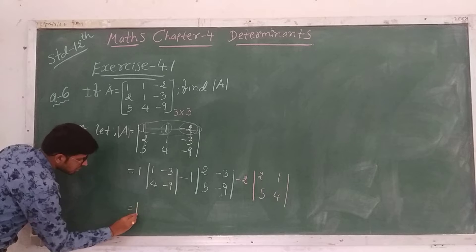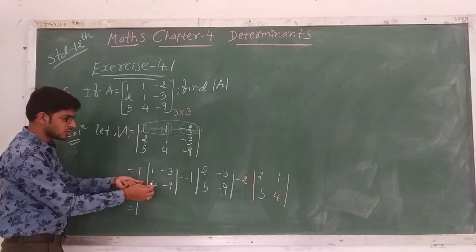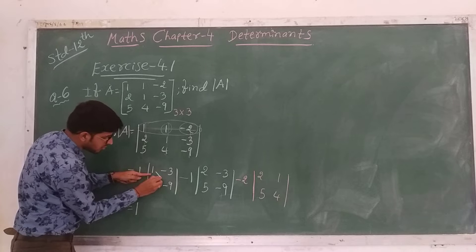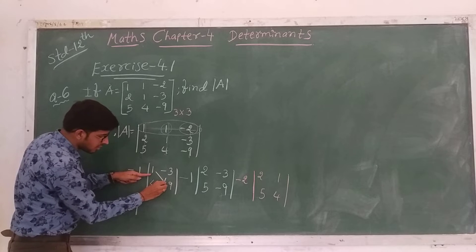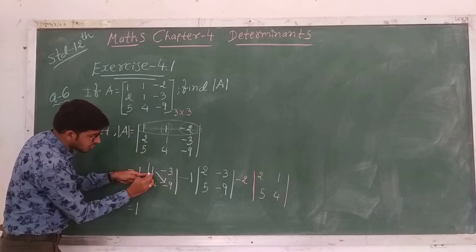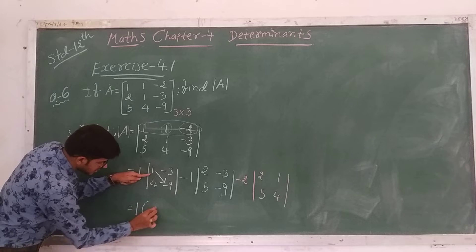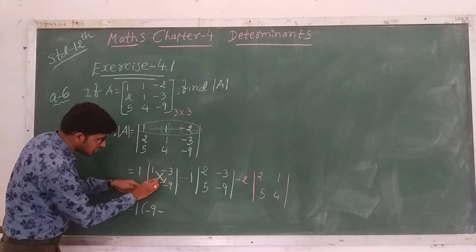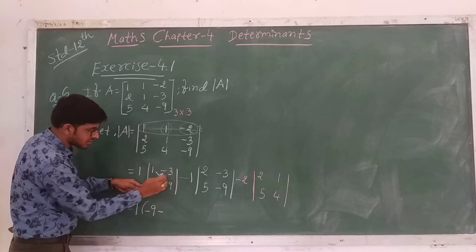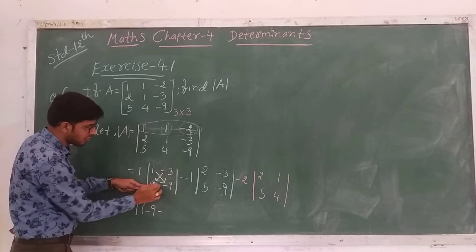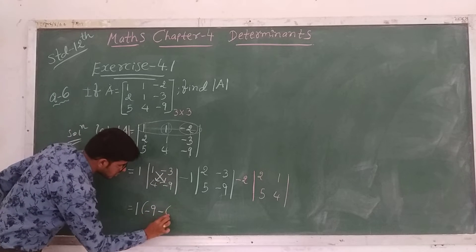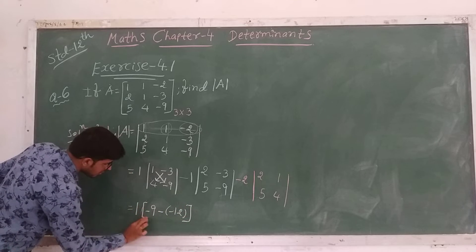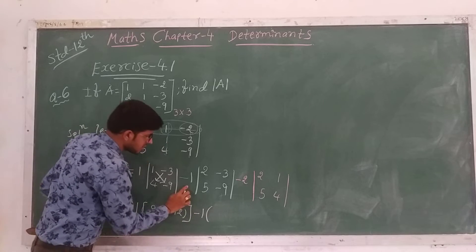Now we have to solve these 2×2 determinants. We can solve them easily. First we take the multiplication of the principal diagonal: 1 × (-9) = -9. Minus the multiplication of the secondary diagonal: (-3) × 4 = -12. So we write down the bracket: minus 1 as it is for the second term.